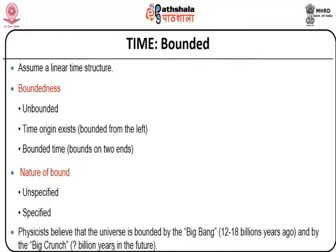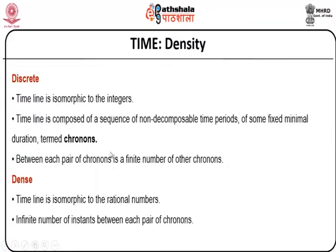Physicists believe that the universe is bounded by the big bang theory, which says 12 to 18 billion years ago, and by a big crunch where we might not know the future — many billion years in the future. One of the other dimensions of time is density, which is supposed to be a discrete value where the timeline is isomorphic to the integers. The timeline is composed of a sequence of non-decomposable time periods of some fixed minimal duration called chronons. Between each pair of chronons there is a finite number of chronons. Between discrete density, there will also be dense density, where the timeline is isomorphic to rational numbers.